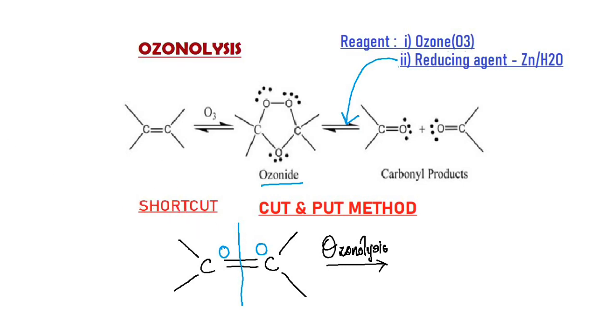So the products of this reaction will be the same carbonyl products that you've observed before. Now remember guys, this method is applicable only for alkenes. Wherever you have a double bond, cut it and put oxygens across it, and the ozonolysis products are ready.